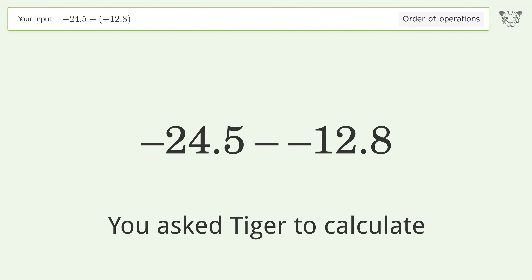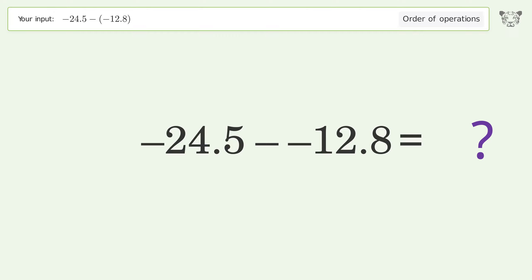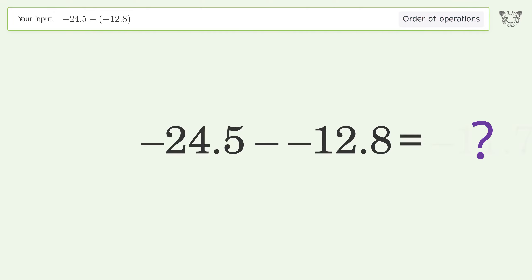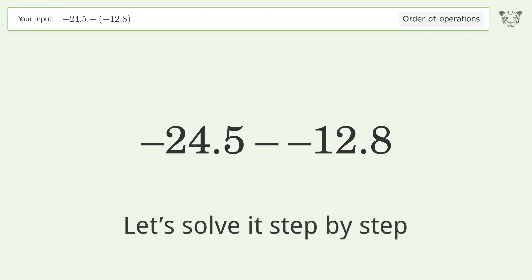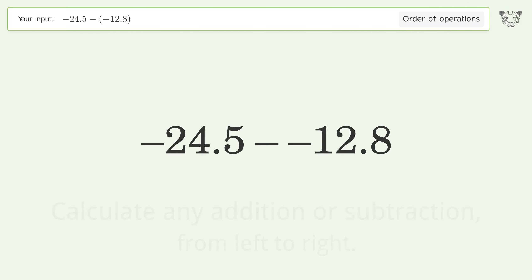You asked Tiger to calculate this. It deals with the order of operations. The final result is negative 11.7. Let's solve it step by step.